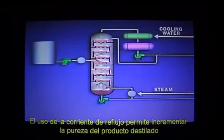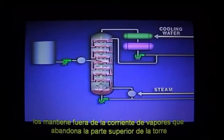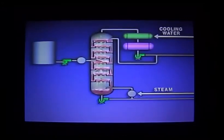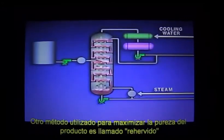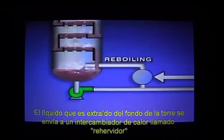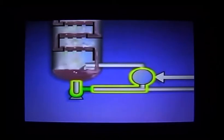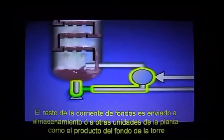Refluxing increases the purity of the overhead product because condensing the vapors made of heavier fractions keeps them out of the stream of vapors that leaves the top of the tower. Another method used to maximize product purity is called reboiling.